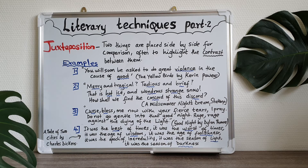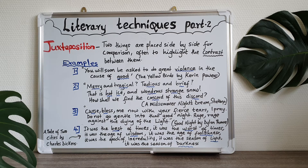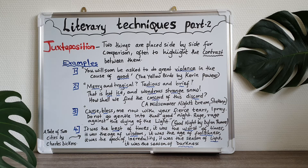Let us look at some examples. Example one is a quote from The Yellow Birds by Kevin Powers: "You will soon be asked to do great violence in the course of good." You can see in that quote we have two words that are juxtaposing each other — that contrast each other — and that is violence and good.